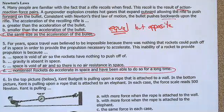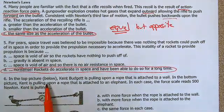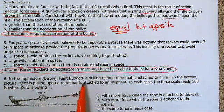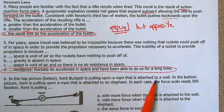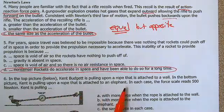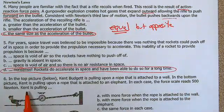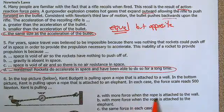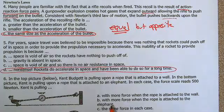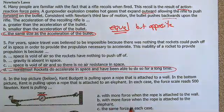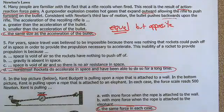Number six: in the top picture, Kent is pulling upon a rope attached to a wall. In the bottom picture, Kent is pulling on a rope attached to an elephant. In each case, the force on the scale reads 500 newtons. Is Kent pulling with more force when the rope is attached to the wall, more force when attached to the elephant, or the same force? If this is 500 and this is 500, that has to be the same amount of force.